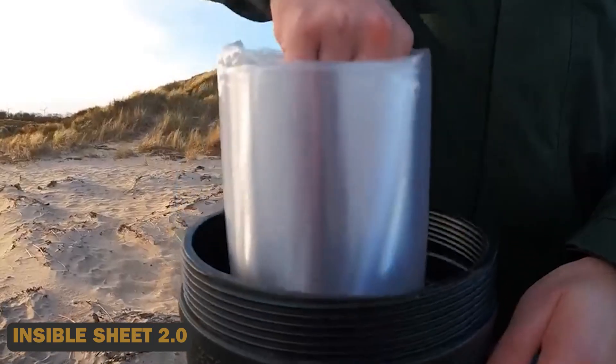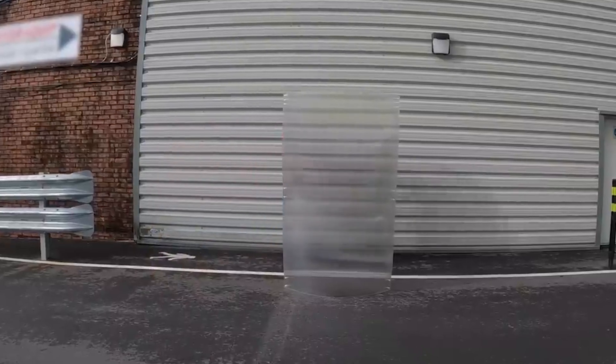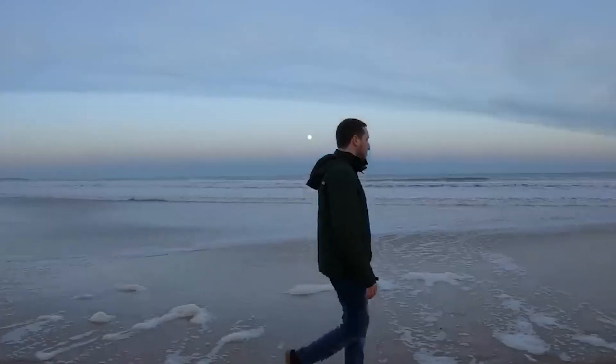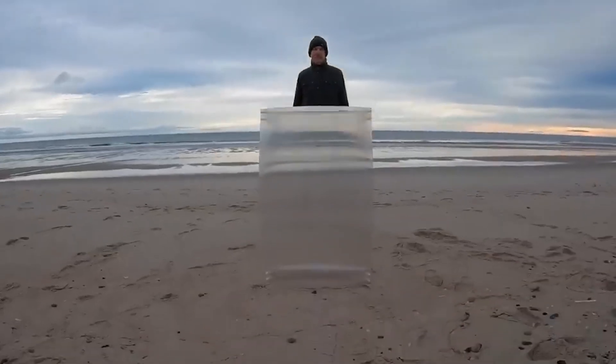Number 2: Invisible Sheet 2.0. A groundbreaking UK-based technology that uses precision-engineered lenses to render anything behind it invisible. This compact and collapsible shield comes in three sizes, with the largest, the Mega Shield, capable of concealing multiple individuals.